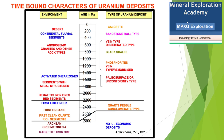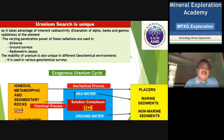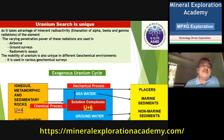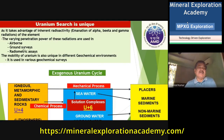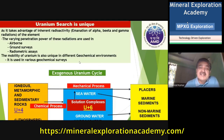How do we go about the search for uranium? It is very unique. Since uranium is a radioactive mineral, it emanates alpha, beta, and gamma rays, and we take advantage of this property in airborne surveys, ground surveys, and radiometric surveys. The mobility of uranium is also unique, as discussed in the geochemical environment, and it is used in various geochemical surveys.